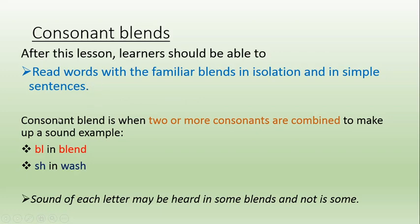What is a consonant blend? This is when two or more consonants are combined to make up a sound. For example, there is this consonant blend here which sounds like 'bl', like in the word 'blend'. And there is this consonant blend here which sounds like 'sh', like in the word 'wash'.